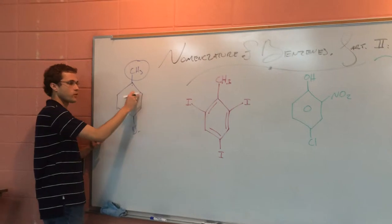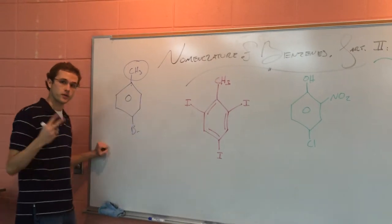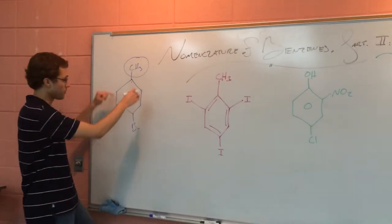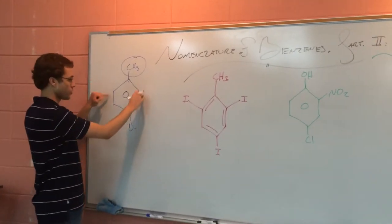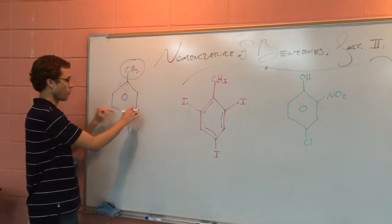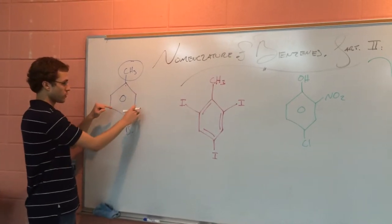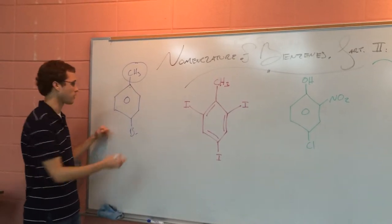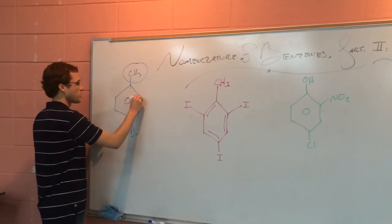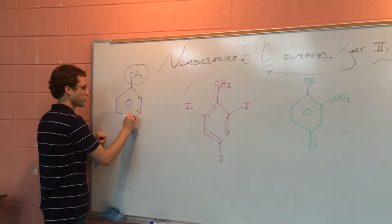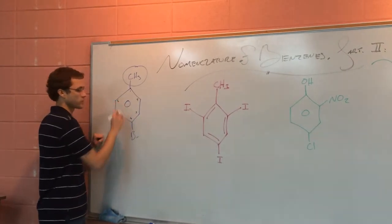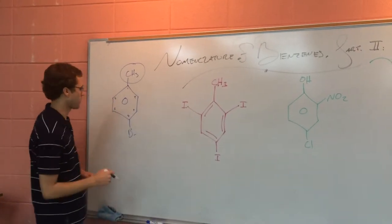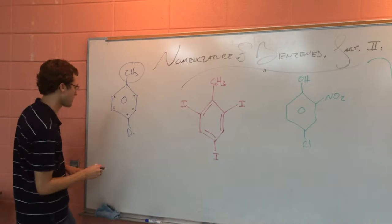We can go and name this compound a couple of ways. We have to start at the toluene carbon as number one if we're numbering, and it doesn't matter which direction we make two, because it's going to be the same either way. Two, three, four — it's going to be the fourth carbon either way. We'll just name it in a counterclockwise fashion for this one.